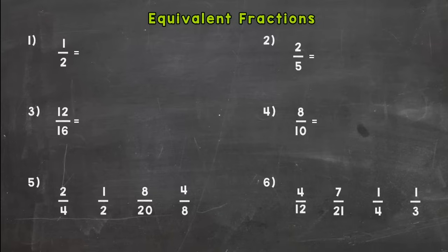So our main big rule for equivalent fractions is whatever you do to the numerator, you need to do to the denominator or whatever you do to the denominator, you need to do to the numerator. If you don't know what numerator and denominator are, the top number is the numerator and the bottom number is the denominator. So whatever you do to the top, you got to do to the bottom or whatever you do to the bottom, you have to do to the top.